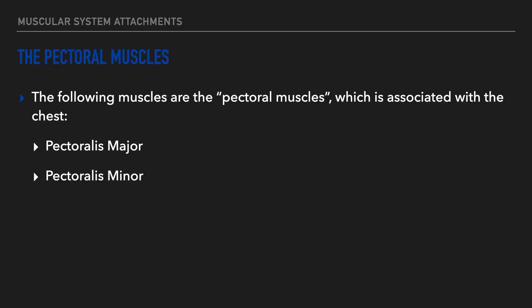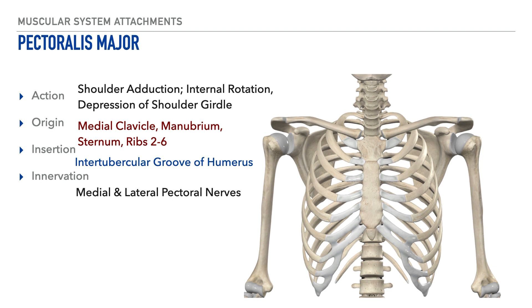The first group of muscles we're going to investigate are the pectoral muscles. The term pectoral refers to the chest, and the two pectoral muscles are the pectoralis major and the pectoralis minor. For the pectoralis major, its primary actions include shoulder adduction and internal rotation, as well as depression of the shoulder girdle. Its origin is on the medial portion of the clavicle, the manubrium, the sternum, and ribs two through six.